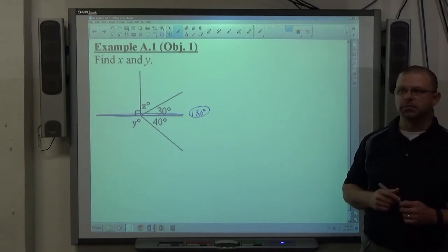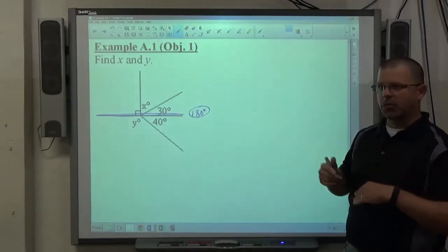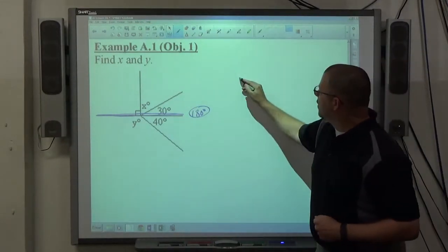They're also called a linear pair. Two angles that form a straight line are a linear pair, or if they form a straight line, they're supplementary. That just means they add up to 180.